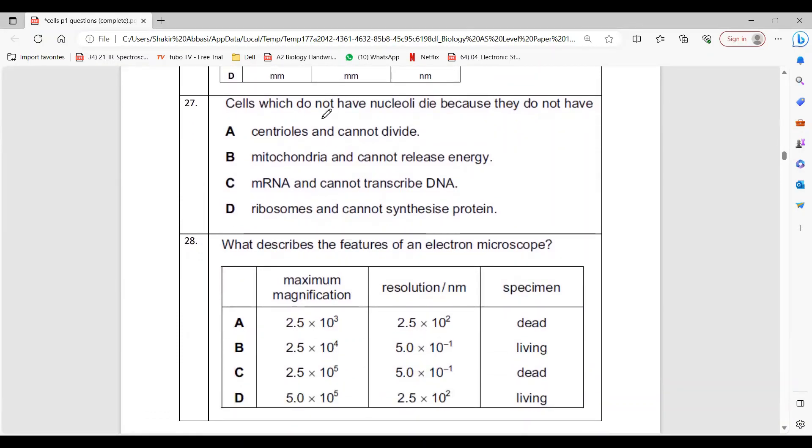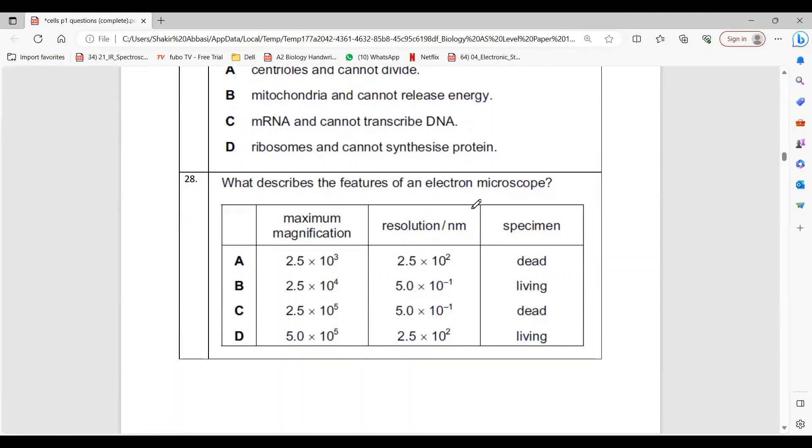Question 37: Which cells do not have nuclei? They die because nucleolus makes the ribosome. If no ribosome, they cannot make protein. So the answer is delta.